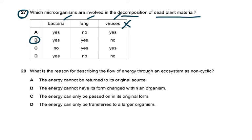Dead plant matter is decomposed by bacteria and fungi, not by viruses. Viruses live on other living organisms — they are called total parasites because they must use the host cell's machinery: its ribosomes, its enzymes. Dead matter cannot support viruses, so viruses must survive on a living host cell.